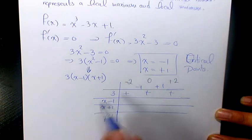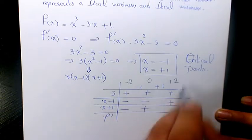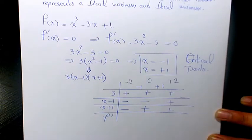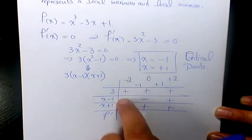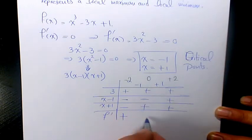When you substitute negative 2, it's going to be negative; 0 is going to be negative; 2 minus 1 is going to be positive here. Negative 2 plus 1 is negative; 0 plus 1 is plus; 2 plus 1 is positive. So positive times negative times negative is positive; positive times negative times positive is going to be negative; positive times positive times positive is going to be positive.